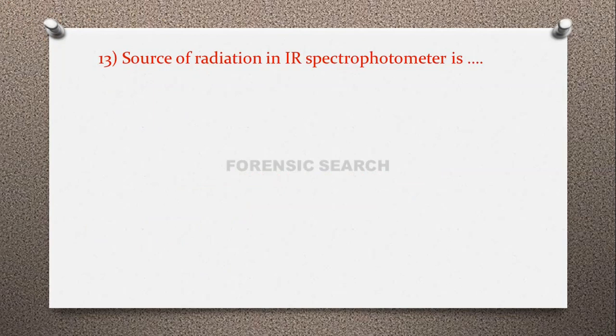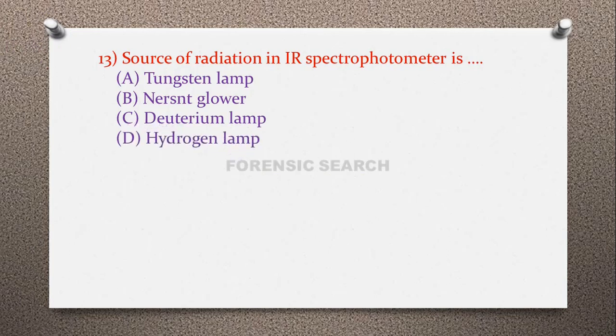Question 13: The source of radiation in an IR spectrophotometer is — option A: tungsten lamp, option B: Nernst glower, option C: deuterium lamp, option D: hydrogen lamp. The correct answer is option B — Nernst glower. The tungsten filament lamp is used in visible spectroscopy, and deuterium and hydrogen lamps are used as sources in UV spectroscopy, while the Nernst glower is used in the IR spectrophotometer.